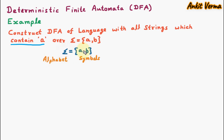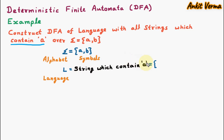The alphabet is the set of symbols given to us. From a and b we are going to generate the strings, and these strings will contain 'a'. Now we are going to define the language L. Here L signifies language, and the language is the set of all strings which contain 'a'. That is equal to the set: strings like 'a', 'aa', 'aaa', 'aaaa', 'aaaaa', and so on.